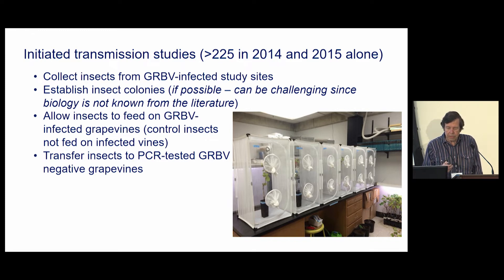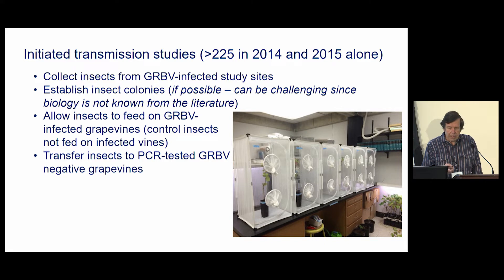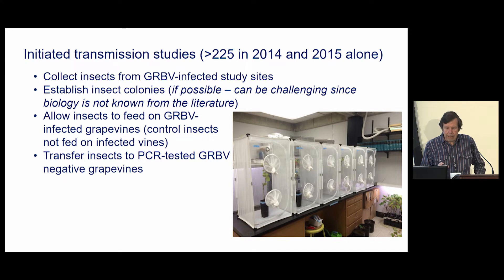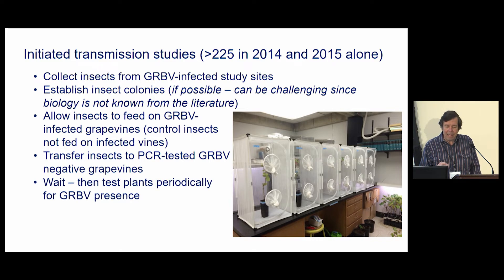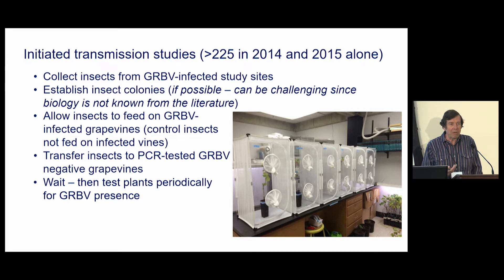In some cases we were able to establish colonies. We would allow those insects we collected to feed on red blotch virus-infected grapevines, then take those insects after feeding and put them on negative grapevines. And then we had to wait — we didn't really know how long it would take for the virus to be expressed in the plant, and to be honest we still don't really know exactly.